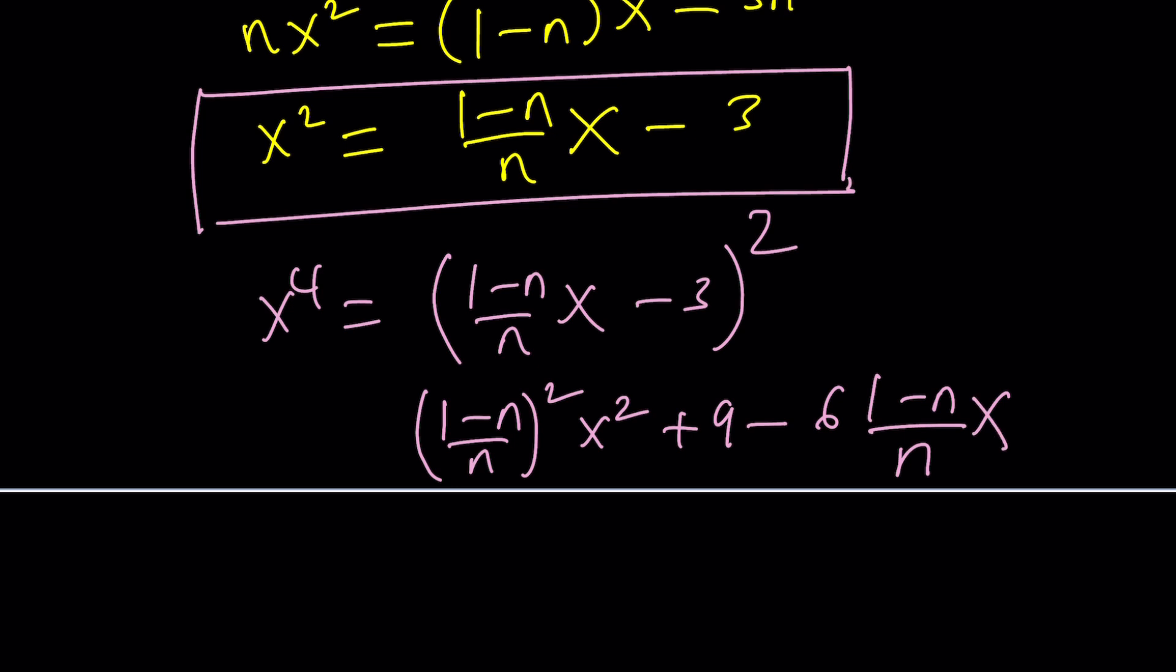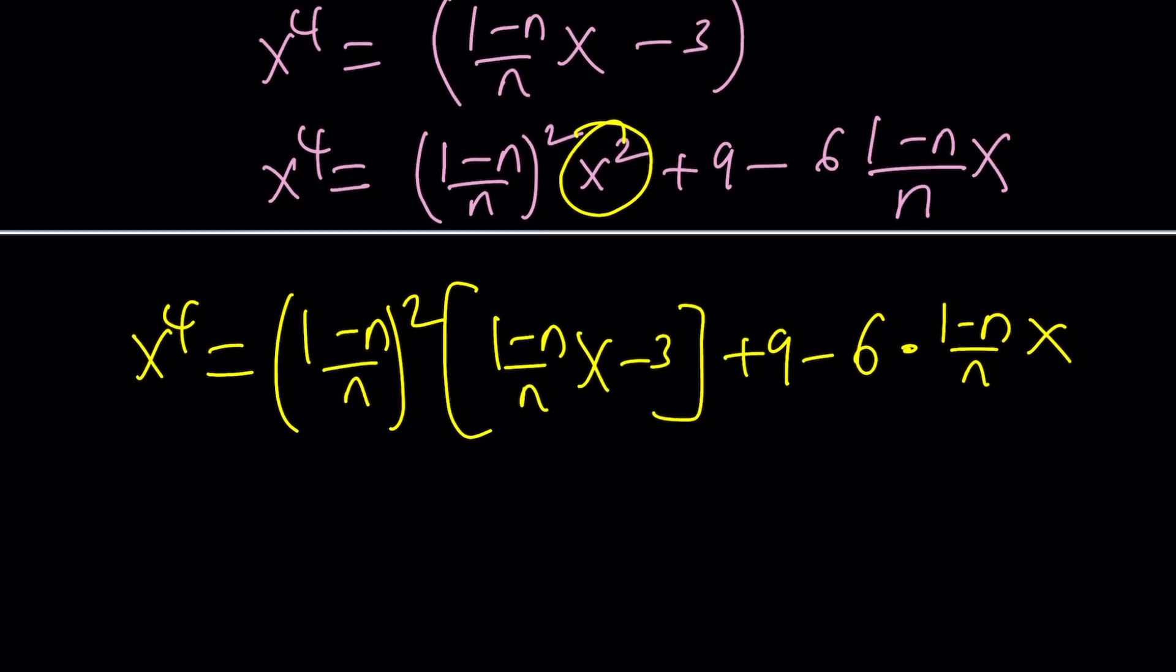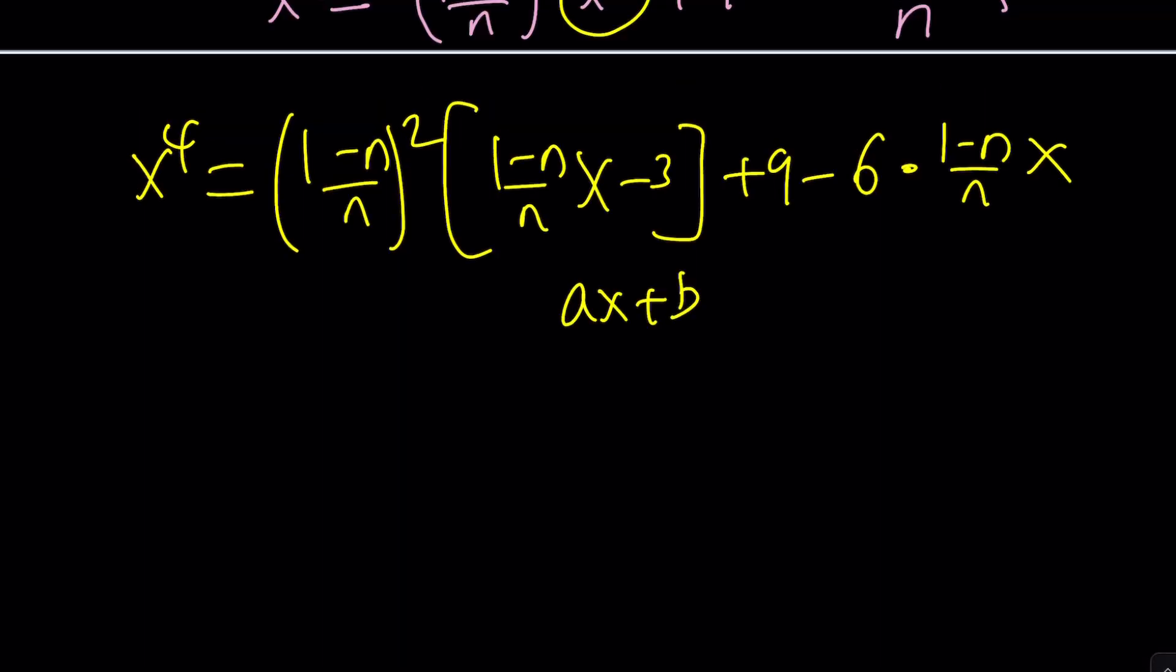This is x to the fourth. And then replacing x squared with what it is one more time. Replace x squared with 1 minus n over nx minus 3 plus 9 minus 6 times this. And then when you rearrange the terms you're going to realize you can find x to the fourth as ax plus b. a and b are going to be in terms of n.